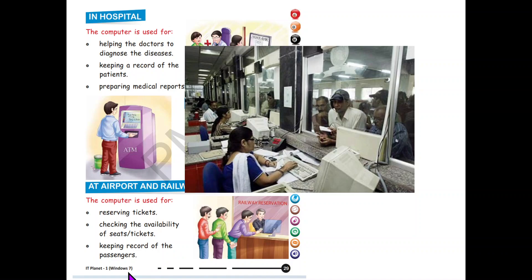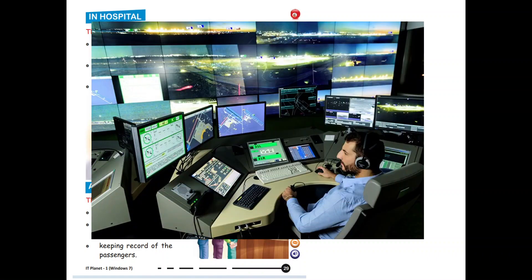A record of the passengers is also maintained. The ticket checker already knows the names of passengers and their seat numbers because of the computer — it keeps the record of the passengers. At the airport, there is an air traffic control system. Just like road traffic, to keep the aeroplanes in check, the air traffic control takes the help of the computer.